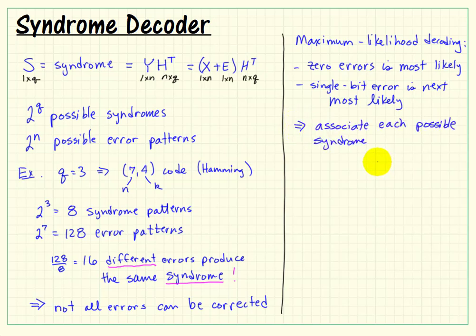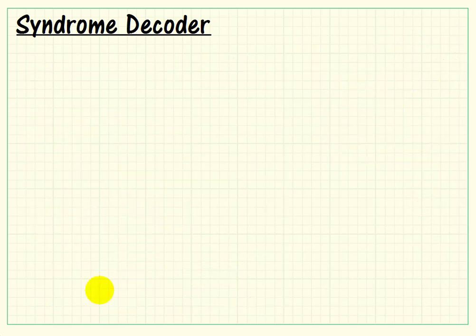So what we're going to do is associate each possible syndrome with its most likely error pattern. And we'll use that as our basis for implementing a correction.